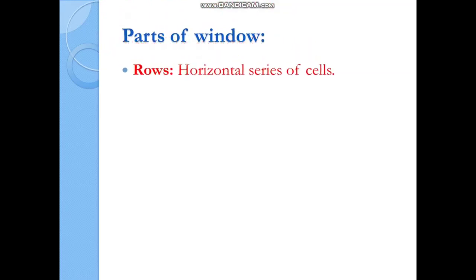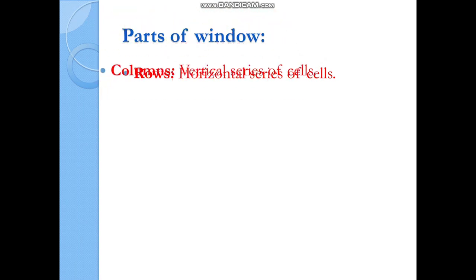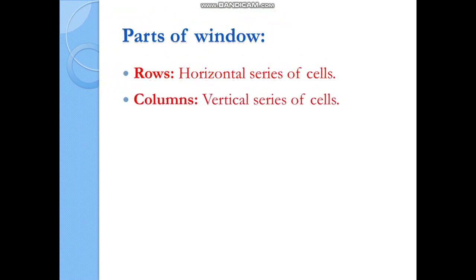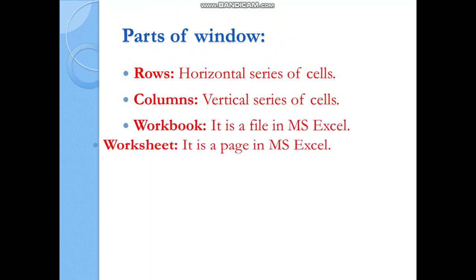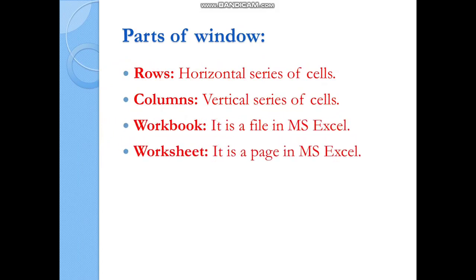The special parts of the Excel window: rows are the horizontal series of cells, columns are the vertical series of cells. A workbook is a file in MS Excel. A worksheet is a page — or rather a vast working area — in MS Excel. When you open Excel, you see this vast area for typing called a worksheet, and it can consist of many such pages.